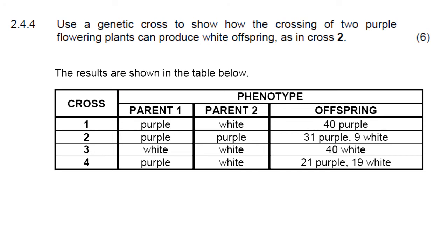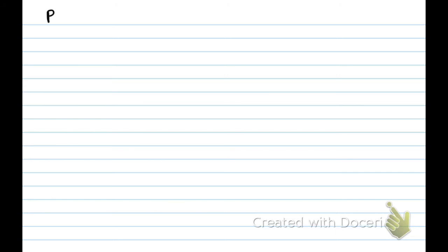Then if we look at question 2.4.4, use a genetic cross to show how the offspring of two purple flowering plants can produce a white offspring, as in cross two. And this is a six mark question, which means we're going to do a proper genetic cross now. As always, we start by talking about the P1 generation. And remember, we are now going to start by saying phenotype, which is the physical expression of the characteristics. In this case, we are going to cross purple with purple, as it says in the table.